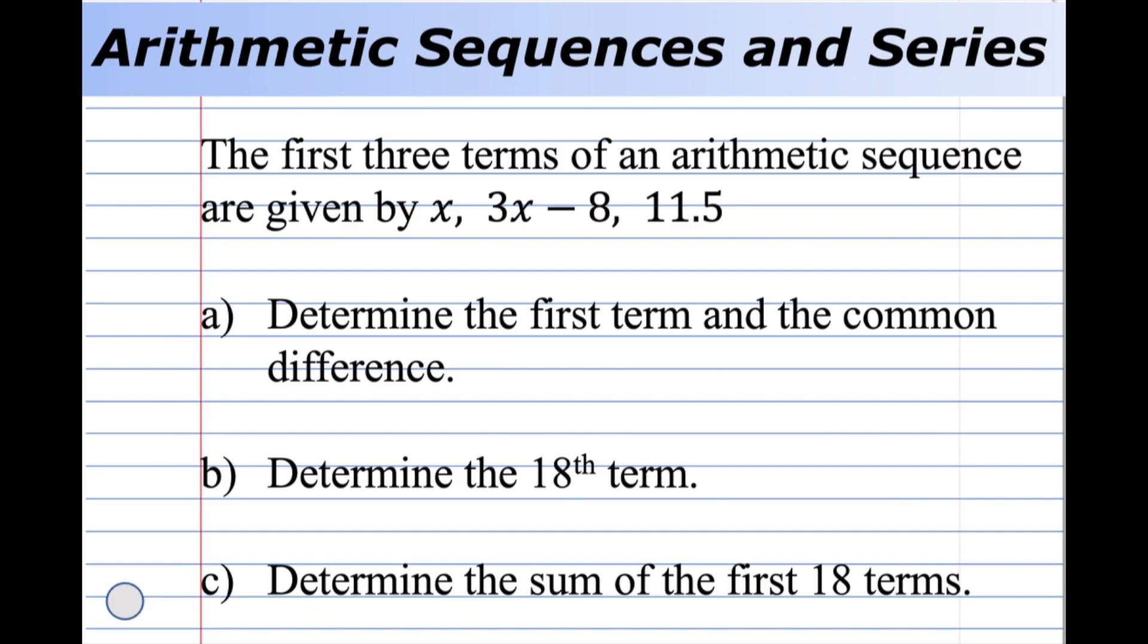The first three terms of an arithmetic sequence are given by x, 3x minus 8, and 11.5. Determine the first term and the common difference. Determine the 18th term, and determine the sum of the first 18 terms.